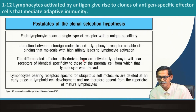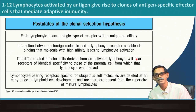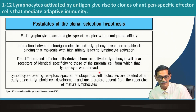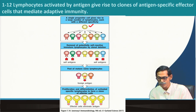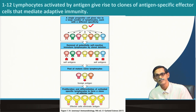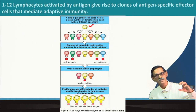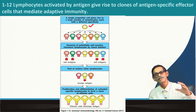Third: the differentiated effector cells derived from activated lymphocytes will bear receptors identical to the parental cell from which they were derived. The yellow cell interacts with the antigen and proliferates — from one cell, now there are five — but all look identical. They will not change receptor specificity. One receptor interacts with an antigen, that particular B or T cell multiplies into many cells, but the receptor molecules will be the same, so they will interact with the same antigen in the future.